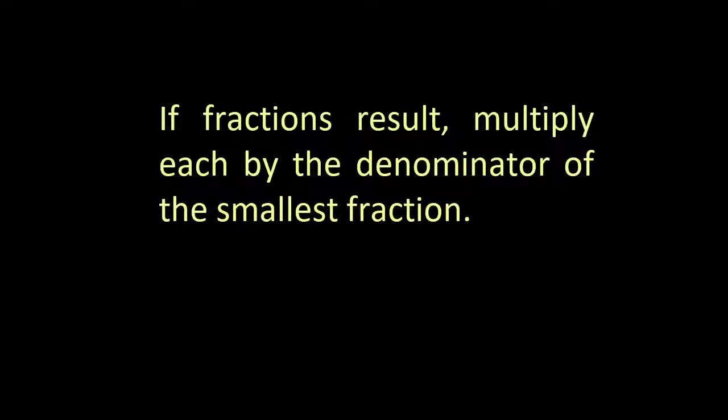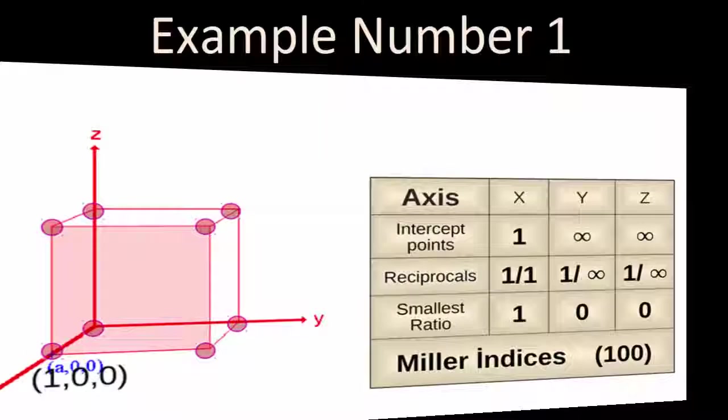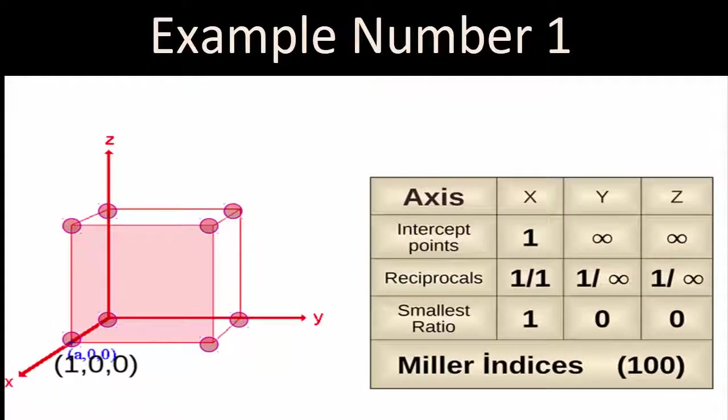Number 3: If fractions result, multiply each by the denominator of the smallest fraction. Example number 1.